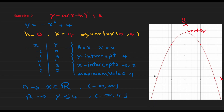The axis of symmetry is the x-coordinate of the vertex: x = 0. The y-intercept is 4, the same as the vertex point where the parabola cuts the y-axis. The x-intercepts are at -2 and +2, where the parabola intersects the x-axis. Since the parabola opens downward — because we have negative x² — the vertex represents the maximum point, which is y = 4. The domain is all real numbers from negative infinity to infinity. The range is y ≤ 4, or the interval from negative infinity to 4.